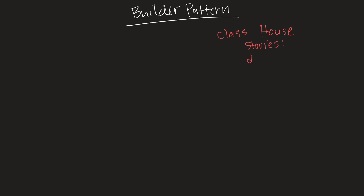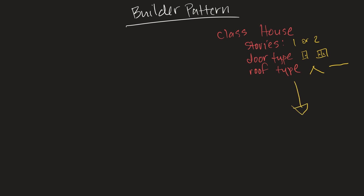Those fields are: stories, door type, and roof type. Stories can either be one or two, door type can either be a single door or a double door, and roof type can either be a pointy roof or a flat roof.